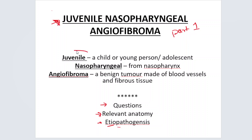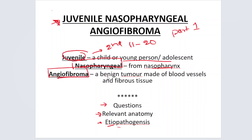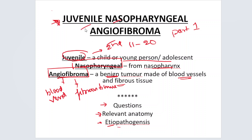What does the name suggest? Juvenile nasopharyngeal angiofibroma. Juvenile means it is a young adult — second decade of life, between 11 to 20 years of age. Nasopharynx means it is arising from the nasopharynx. Angiofibroma means it is a benign tumor made up of blood vessels and fibrous tissue — angio means blood vessels, fibroma means fibrous tissue.